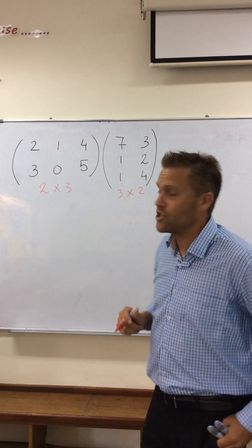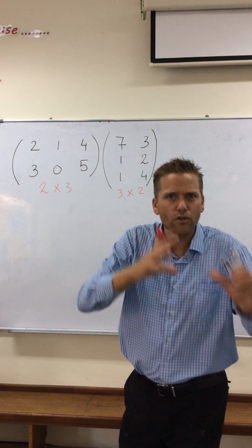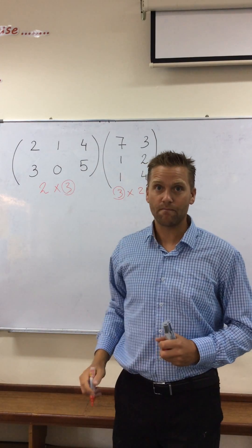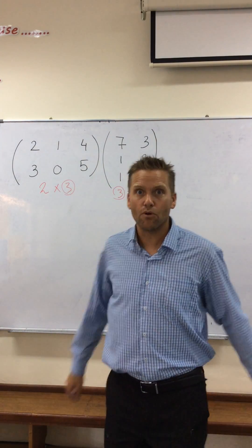Now why do I always check that? Because I can only multiply one matrix by the other if those inner numbers are the same. And they are the same now, so I can multiply them.